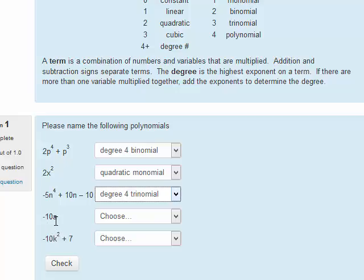Next one, negative 10a. a is the variable. The exponent on the a is an invisible 1. So it's a to the power of 1. That makes it linear. And since there's just one term, it's a linear monomial.